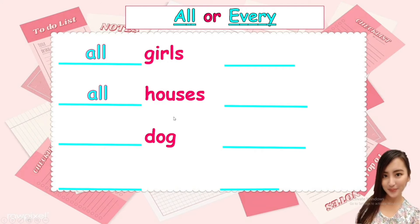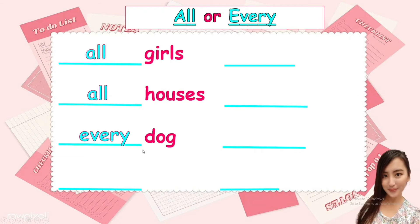Next. Dog. Is this singular or plural? It's singular. As you can see, no S, that's why it's singular. It means it's only one. Only one dog. So are we going to use all or every? The answer is every. Every dog.